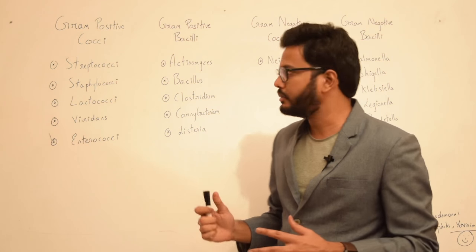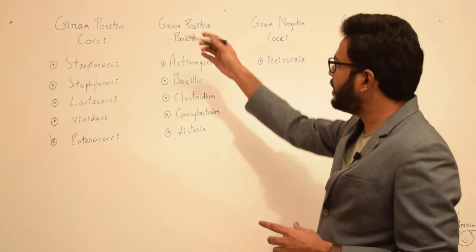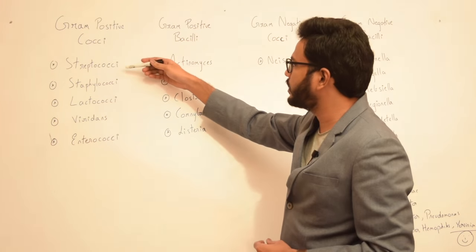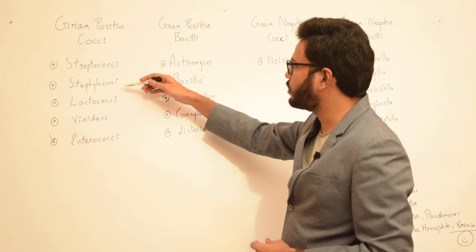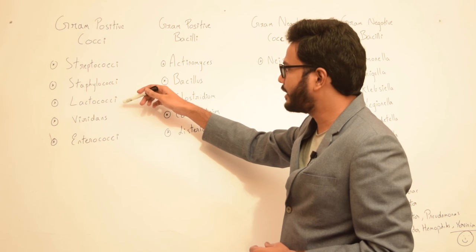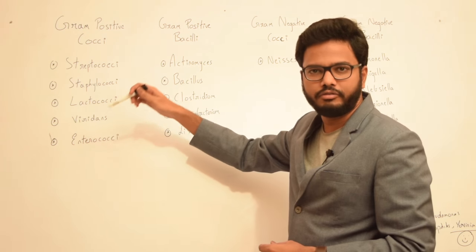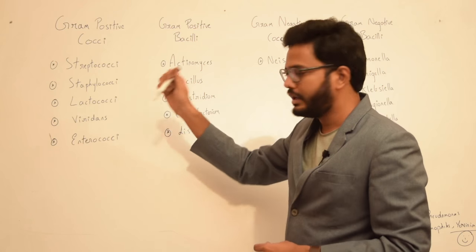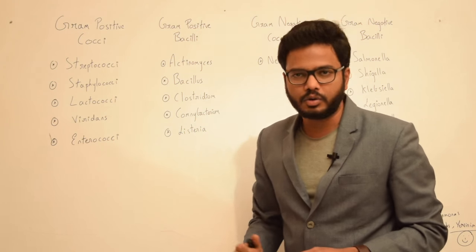Gram positive cocci: we have streptococci, staphylococci, lactococci, viridans group of streptococci, and enterococci.